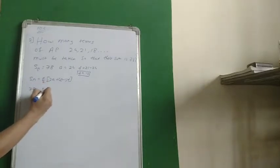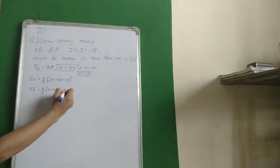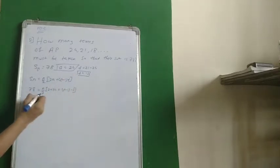N, how many terms? We don't know, we'll write as it is. 2A, 2 into A. What is A? A is 24, 2 into 24, N minus 1 as it is. D is equal to minus 3.